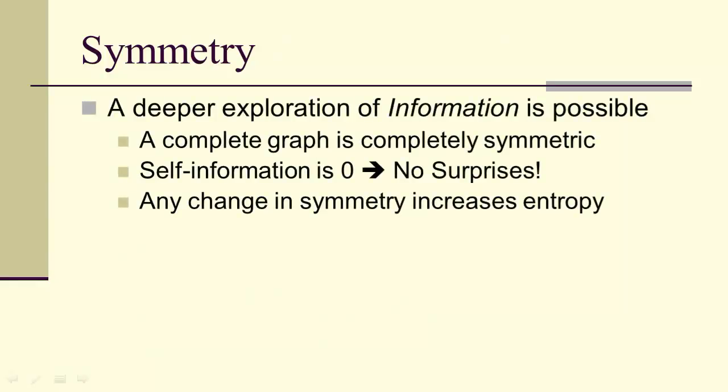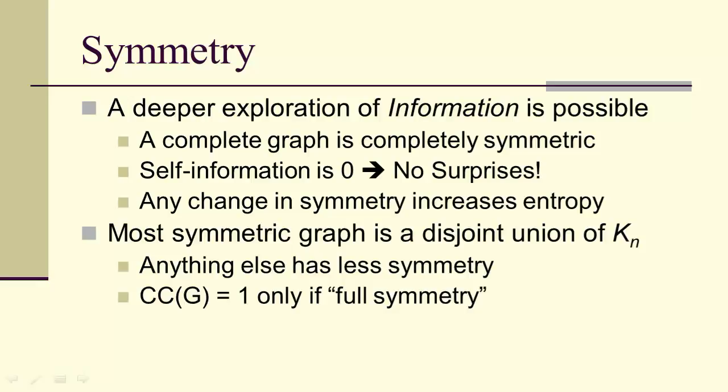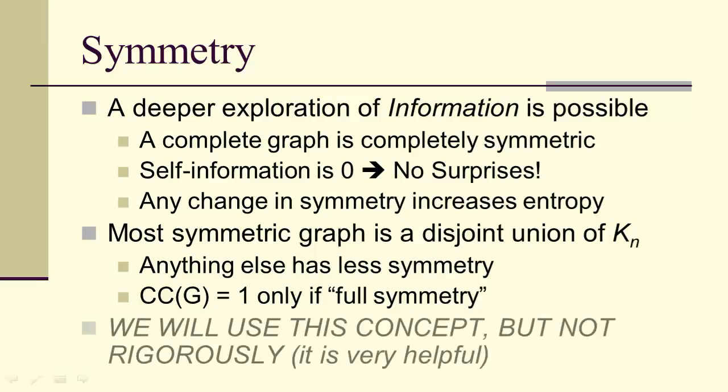Let's just mention that we could explore information even more deeply using the concept of symmetry. So for instance, a complete graph is completely symmetric. In general, the most symmetric graph is a disjoint union of complete graphs. Anything else has less symmetry. And the clustering coefficient, remember, is one. We can think of that as a probability. And therefore, when we have a clustering coefficient of one, then we have in essence no information. So we have full symmetry, absolutely no surprises. All the edges are there, so we're not surprised that we find an edge between any two vertices. So we will use this concept, but not rigorously, but it can actually help us when we use symmetry.